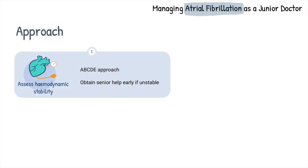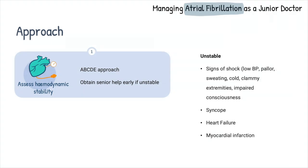On approaching the patient, the first step would be to check hemodynamic instability. Most presentations within cardiology have the potential to cause instability, and AF is definitely one of them. When you get asked to review a patient with AF, first assess hemodynamics using the ABCDE approach. If the patient is unstable, with signs of shock — i.e. hypotension at systolic blood pressure of less than 90, pallor, sweating, cold,